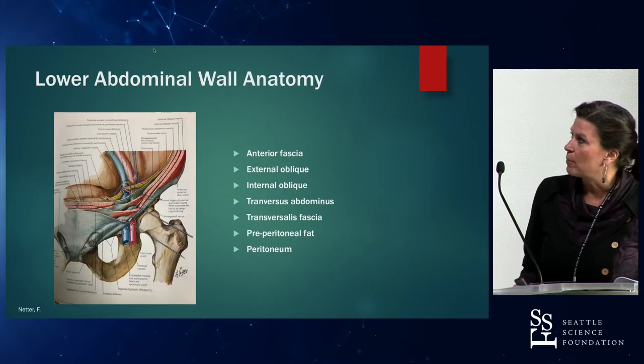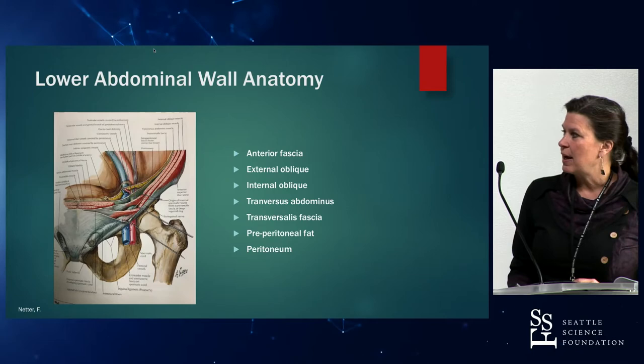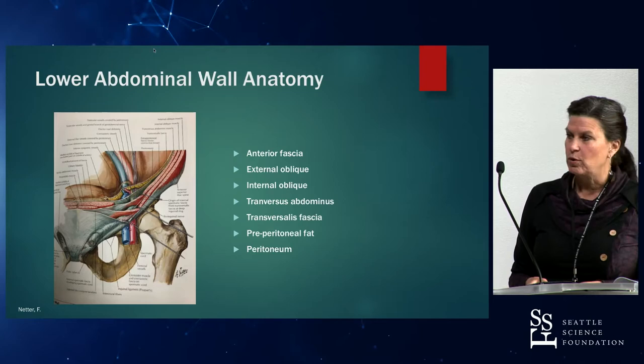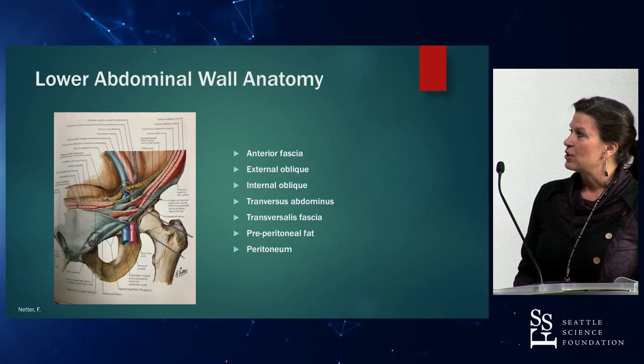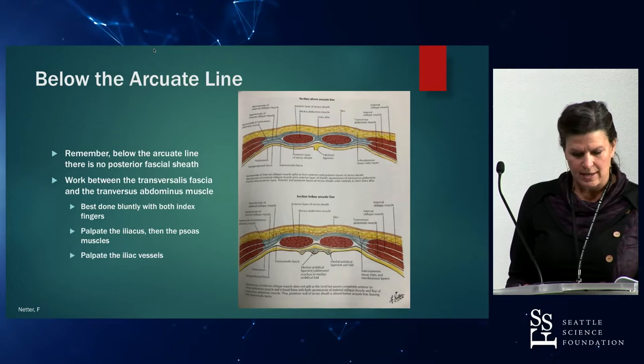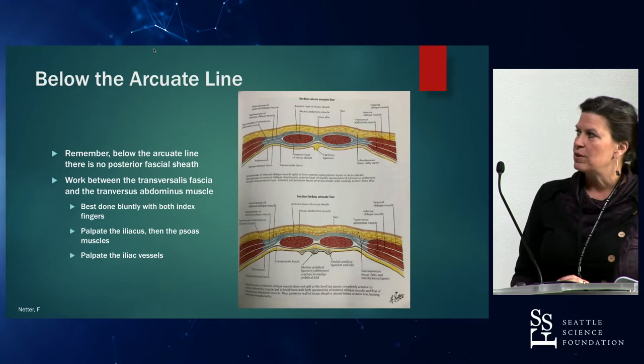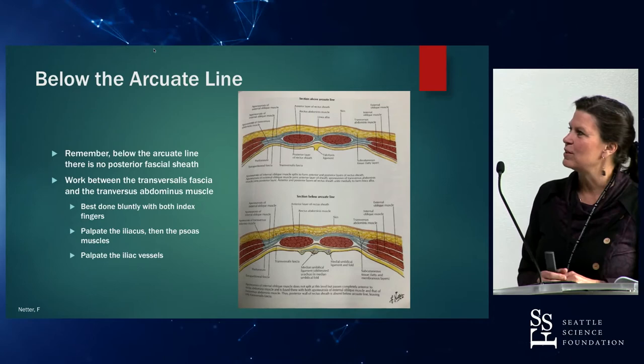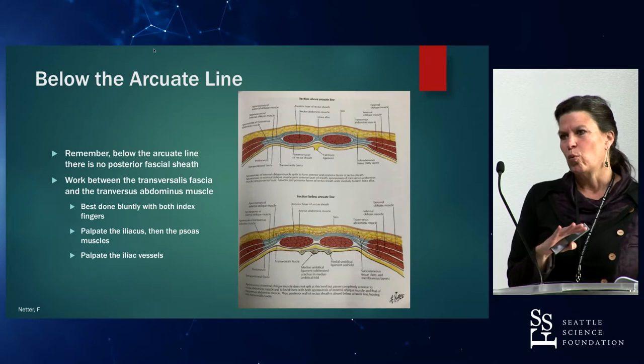When we start this operation, we have to be aware of the lower abdominal wall anatomy and the different layers. Once you're through the skin and Camper's fascia, you get to the anterior fascia, the external oblique, internal oblique, and you're operating between the transversalis fascia and the transversus abdominis. Below the arcuate line, there is no posterior fascia. This sweet spot is where you want to get into the space between the transversalis fascia and the transversus abdominal muscle, then work laterally to get into the retroperitoneal space.